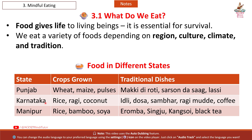Next state: Karnataka. Crops grown: rice, ragi, coconut. Traditional dishes: Idli, Dosa, Sambar, Ragi Mudde, Coffee.